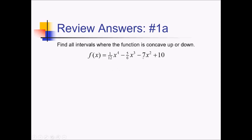So let's take a first derivative. Using our power rule here, for the first term we have 4 times one-twelfth, that's four-twelfths, or one-third, x to the third power. Next we have 15 over 6, which reduces to 5 over 2, x squared, and we're subtracting that. Next we have minus 14x, and then that 10 is a constant, so that's just going to be gone.